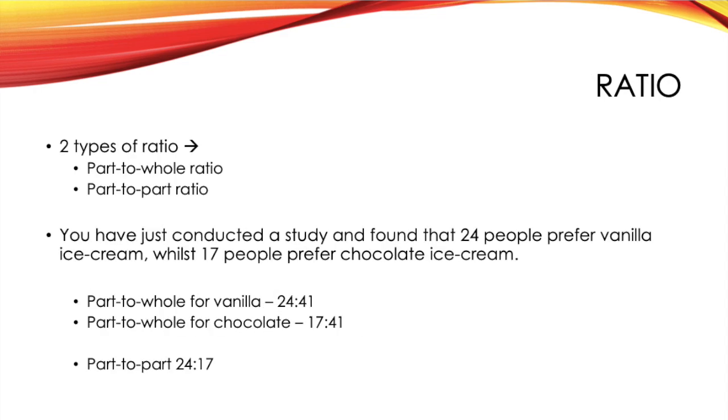Next, we've got ratios. So, there are two main types of ratio that you're likely to come across. You've got your part-to-whole ratio and your part-to-part ratio. And here, I've got yet another example, just so I can clearly show what both of these are. So, you've just conducted a study and found that 24 people prefer vanilla ice cream, while 17 prefer chocolate ice cream. So, your part-to-whole ratio for vanilla would be 24 to 41.